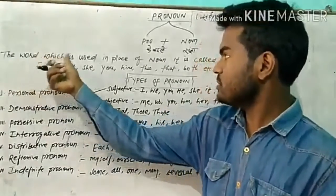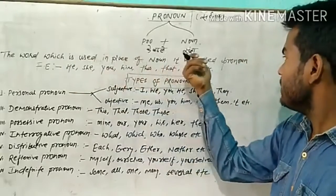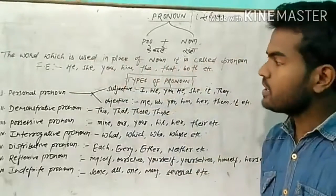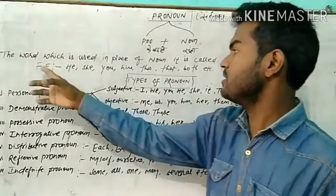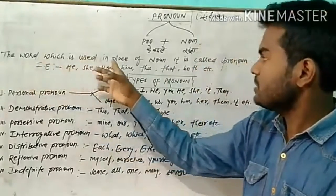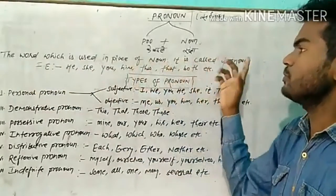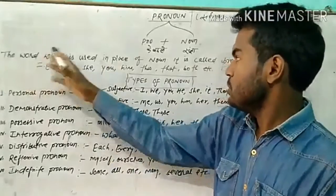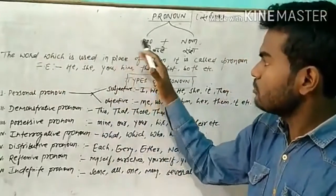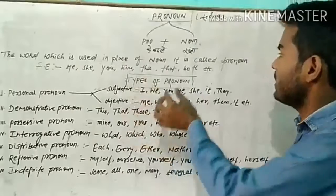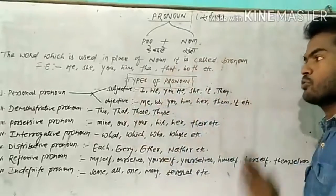The word which is used in place of noun, it is called pronoun. Now we can see the definition which I have written here. The word which is used in place of noun, it is called pronoun. وہ سبد جو sangya کے بدلے میں، جو noun کے place پہ جس کا use کیا جاتا ہے, it is called pronoun.